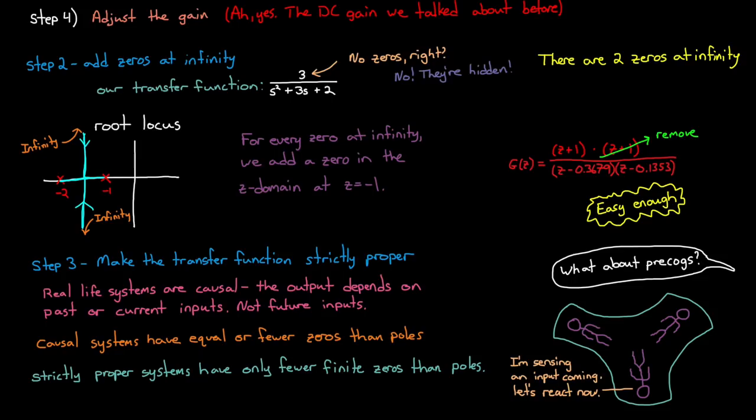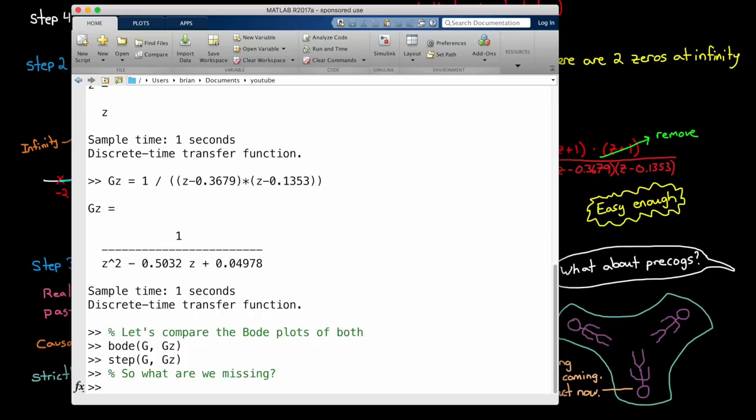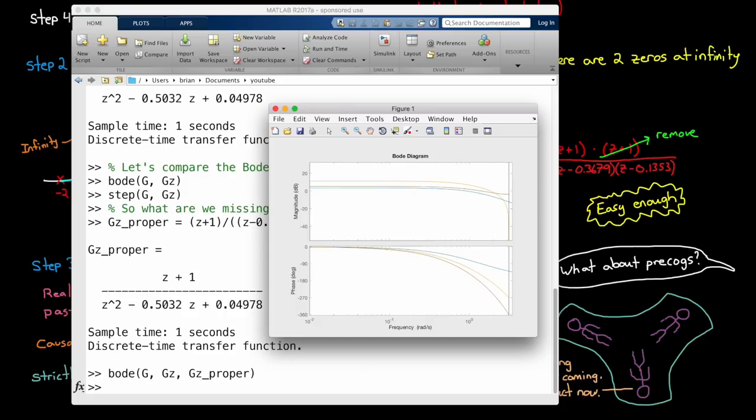Now if we head back over to MATLAB and create this new transfer function, we can then plot its Bode plot alongside the other two. And you can see that it tweaked the shape a little bit. Our phase roll-off isn't quite as severe, and the gain plot matches the roll-off a little better around one radian per second. Not a huge change, but one worth doing.